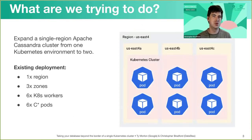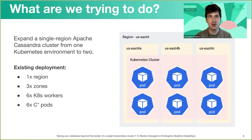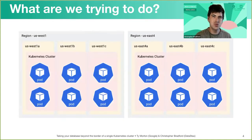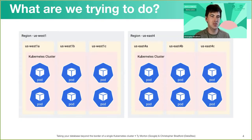Right now we're assuming we're running a database in a single Kubernetes cluster in a single region. In this case we're talking about Apache Cassandra running on six nodes, two per zone across three zones in a region. Where we want to be is two regions, each with a logical Cassandra data center, which translates to two Kubernetes clusters, one per region.